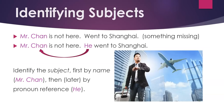Identifying subjects. Let's go back to the previous example. 'Mr. Chun is not here. Went to Shanghai.' Something's missing. It's not 100% clear. Who went to Shanghai? 'Mr. Chun is not here. He went to Shanghai.' What we have done is we've identified the subject, Mr. Chun, and then we refer to the same person by using a subject pronoun in the next sentence: he.